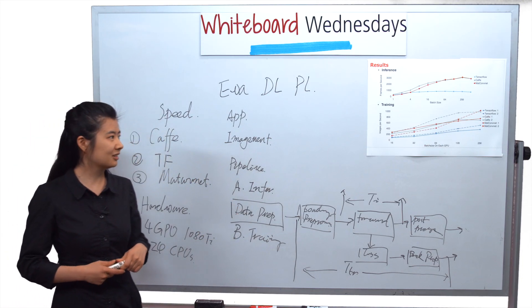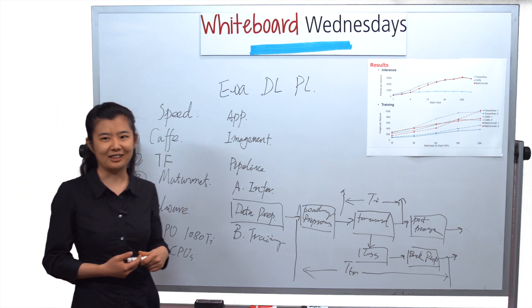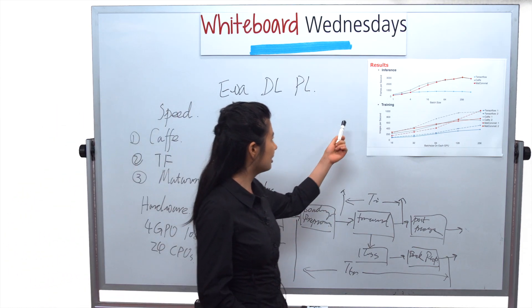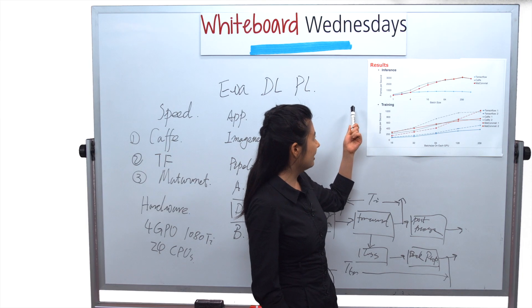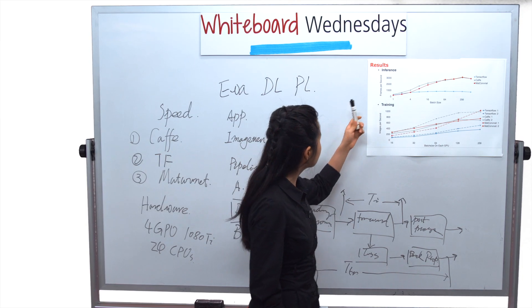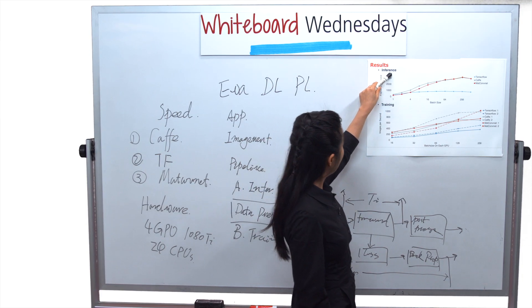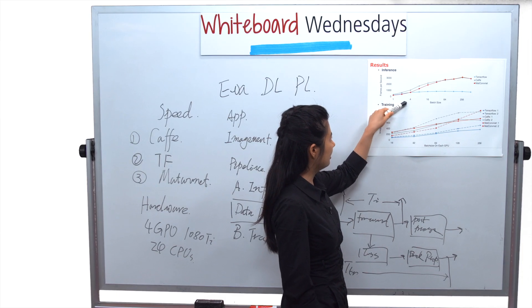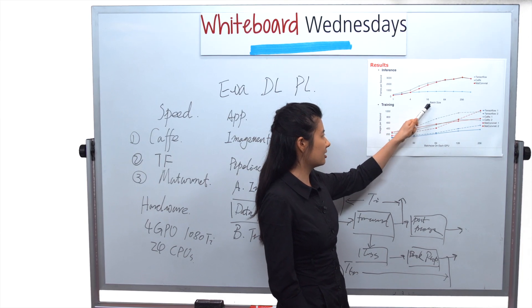This week, the most exciting part: the results we have. Here we show the results of AlexNet. The top figure is for inference, and the x-axis is the batch size.